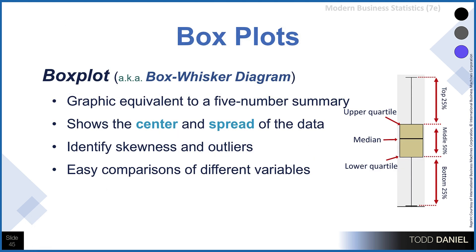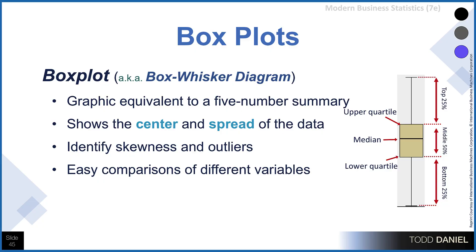The box plot, which is also called a box and whisker diagram, is the graphic equivalent to the five-number summary. It shows the center of the distribution, the median, and the spread of the distribution, through the whiskers. The box plot can allow us to identify skewness, and is also an excellent way to identify outliers. It will also give us the ability to compare different variables by looking at the box plots side by side.